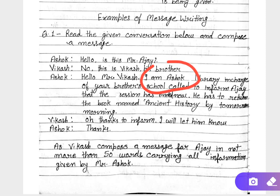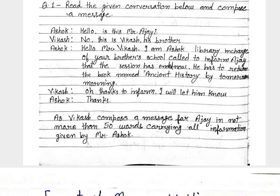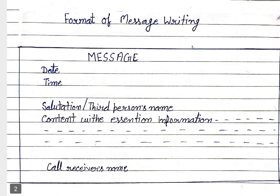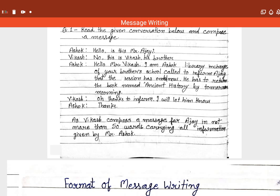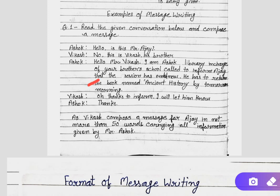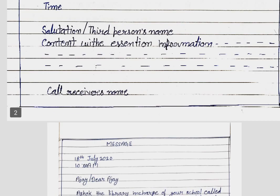Let's look at the question to find out who was calling. Asok was the caller and he was the library in charge of Vikas's brother's school. That is why we have written: 'Asok, the library in charge of your school, called to inform you that the session has ended and you have to return the book named Ancient History by tomorrow morning.' All this information was taken from the question — the session has ended and he has to return the book named Ancient History.